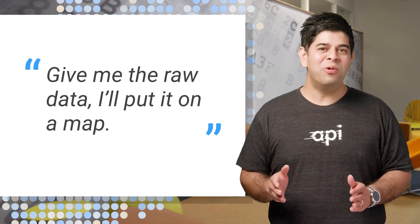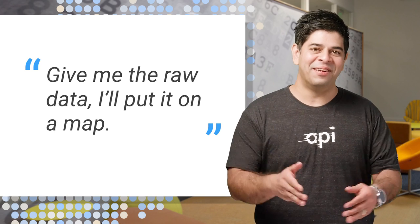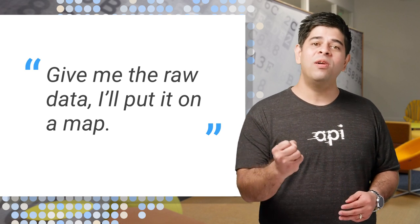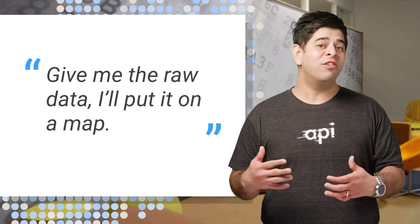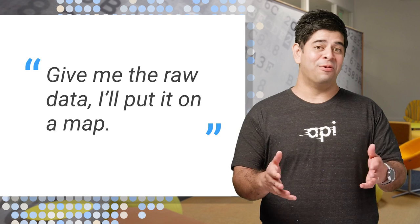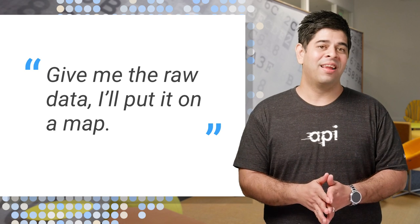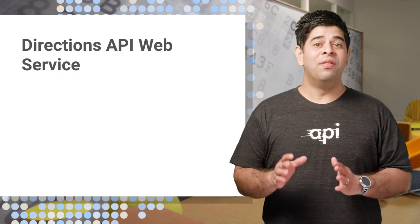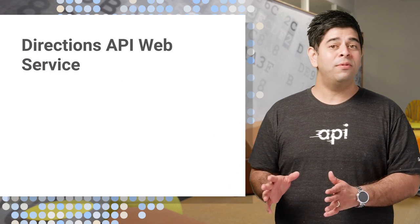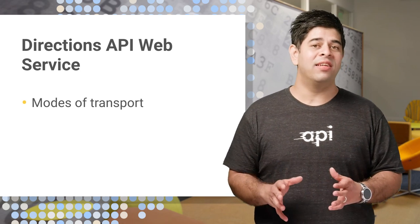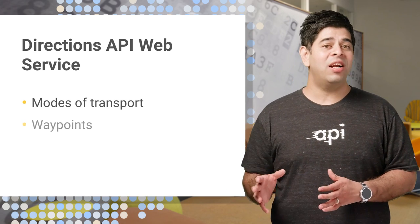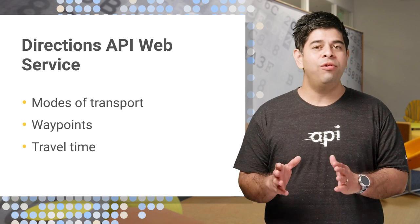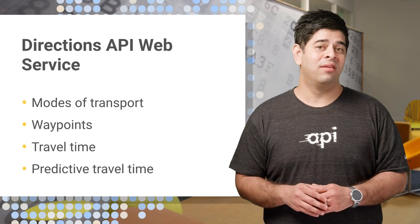In this video, we'll go deeper still, and we'll talk about getting raw data from Google so you can orchestrate it in your apps. Let's start with the Directions API. This is a web service that provides smart content about directions and times, including predictive travel times.